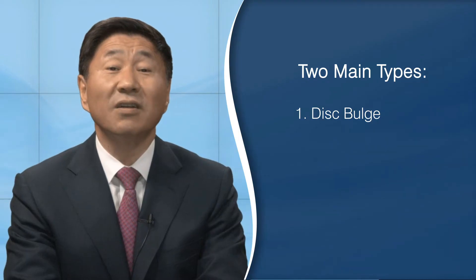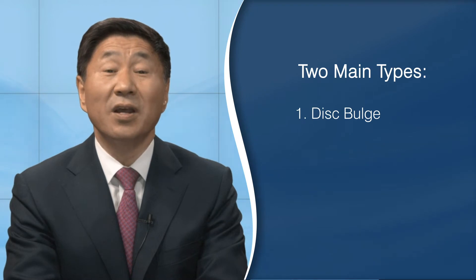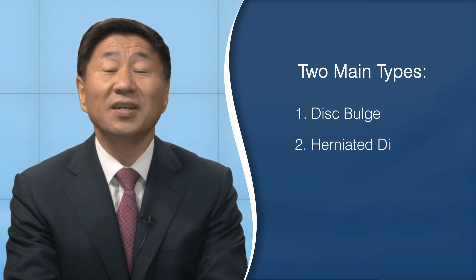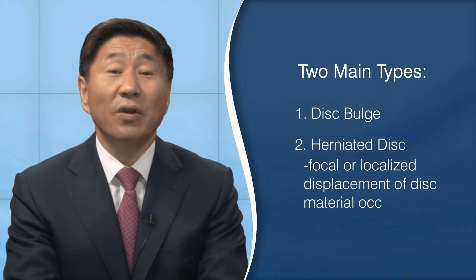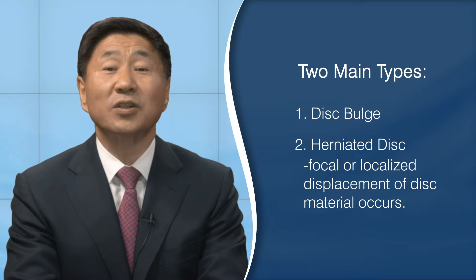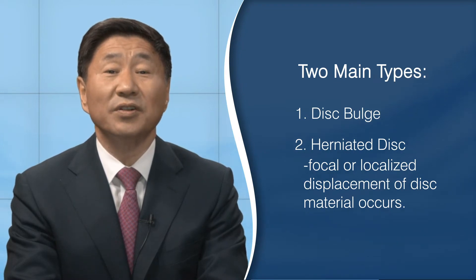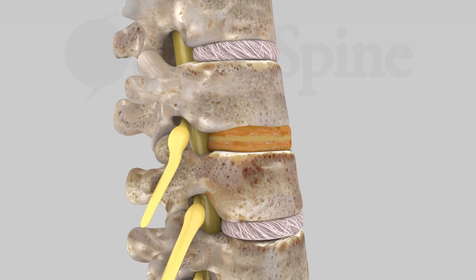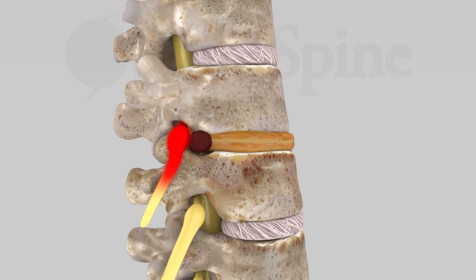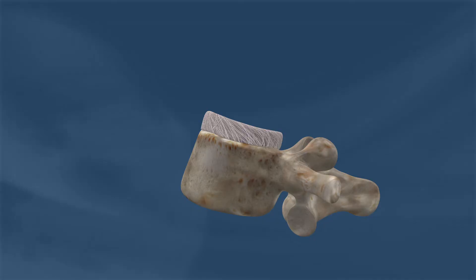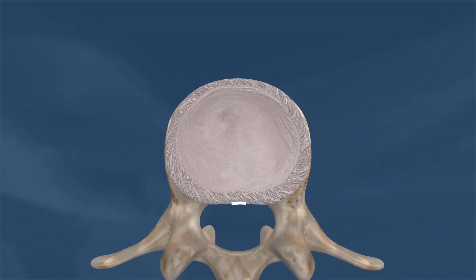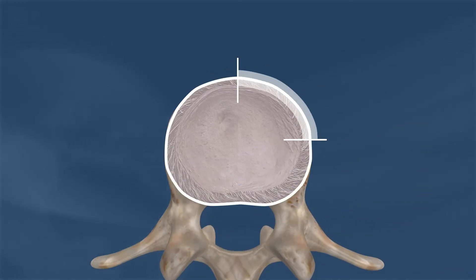In certain deformities such as scoliosis, there can be some asymmetry of the bulge, but it's still a bulge. The second type is the herniated disc, where a focal or local displacement of disc material occurs. My prior video explained this as the jelly donut model. Focal or localized is defined by displacement that is less than 25% of the circumference of the whole disc.